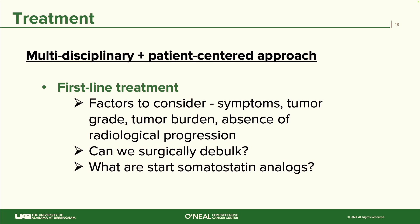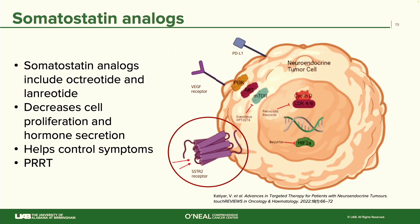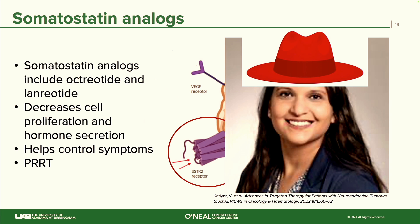Somatostatin analogues are a monthly injection given as octreotide or lanreotide. Remember the red hat — the somatostatin receptor. Earlier we talked about the radioactive dye; now think of a drug that works on the same receptor, sending signals into the cells to help control the growth rate, spread, and symptoms of the neuroendocrine tumor. The same concept applies to PRRT, which we'll hear more about later — it also works on these same receptors.